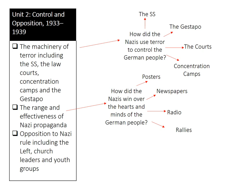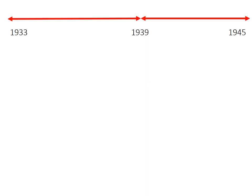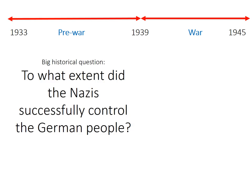In the last video we looked at whether opposition was significant or not. We looked at opposition from the left, from the church, and from young people. Now in this pre-war period from 1933 to 1939, the big historical question that really runs through this entire unit is: to what extent did the Nazis successfully control the German people?